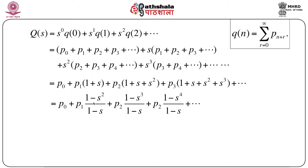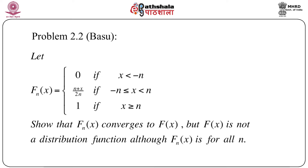After simple algebraic manipulation, we split terms and take (1-s) common to eventually obtain the expression Q(s) = (1 - P(s)) / (1 - s), where s is defined for |s| < 1. This is the probability generating function for the expression P(X ≥ n). Similarly, we can derive probability generating functions for other expressions in terms of P(s), the original PGF of X.